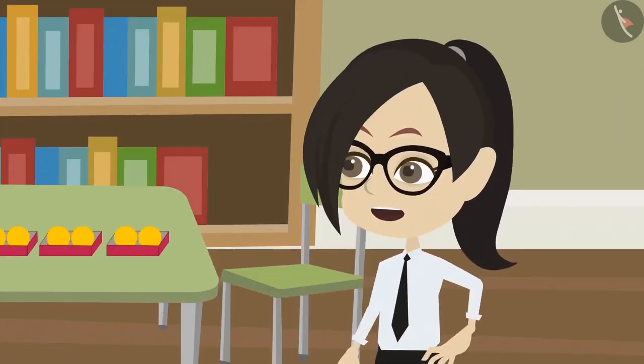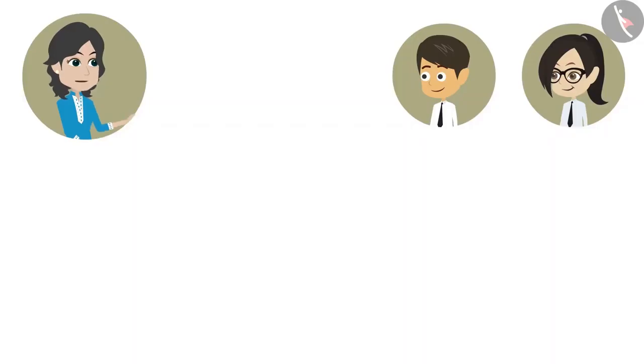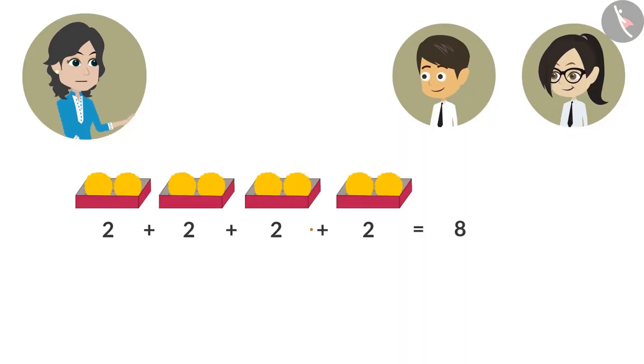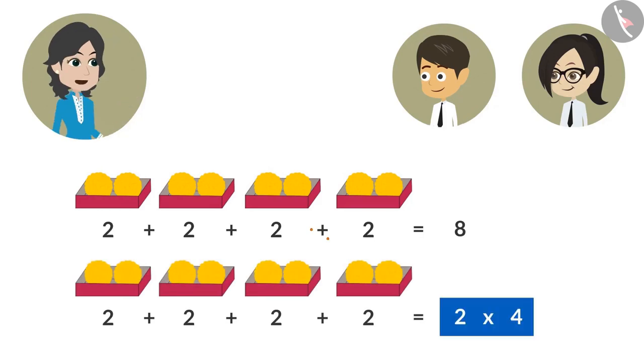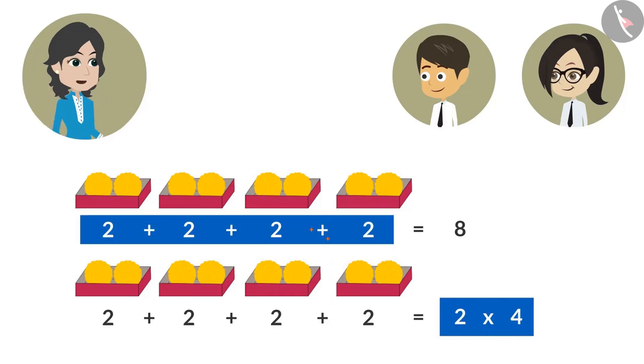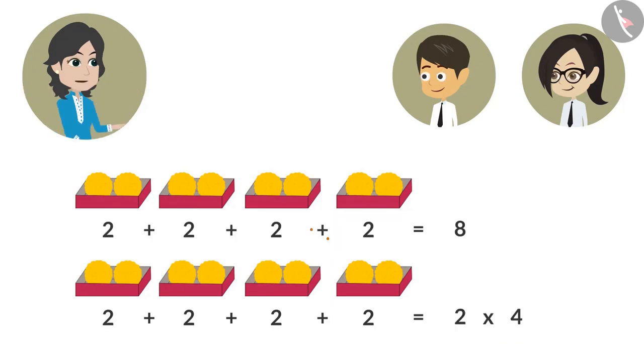We are adding them together to find the total number of laddus. See Vandana, to know the number of laddus in four boxes, you have added two four times. Instead of this, you can multiply two by four. Multiplying two four times means adding two four times. That is why both answers are the same, which is eight.